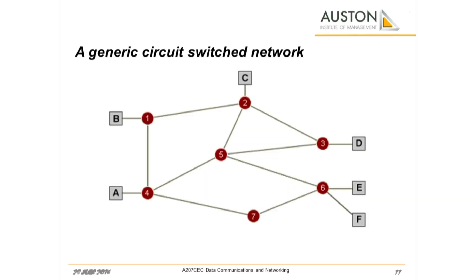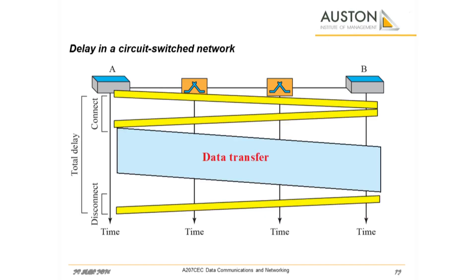The actual communication in a circuit switched network requires three phases: connection setup, data transfer, and connection teardown. It can be argued that circuit switched networks are not as efficient as the other two types of networks because resources are allocated during the entire duration of the connection, and these resources are unavailable to other connections. In a telephone network, people normally terminate the communication when they have finished their conversation. Although a circuit switched network normally has low efficiency, the delay in this type of network is minimal. During data transfer, the data is not delayed at each switch, as resources are allocated for the duration of the connection.